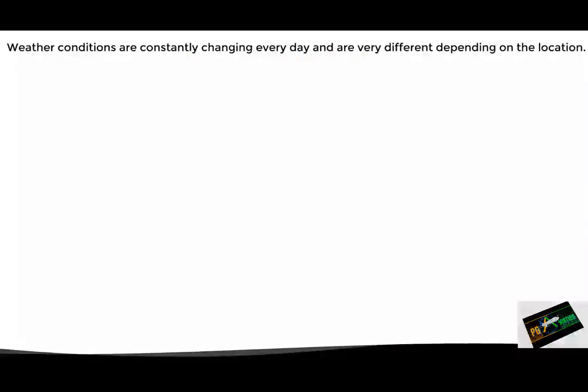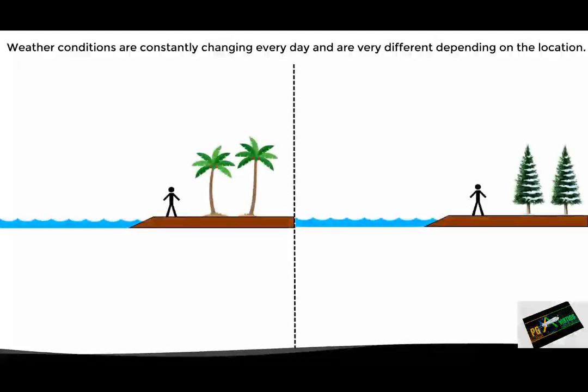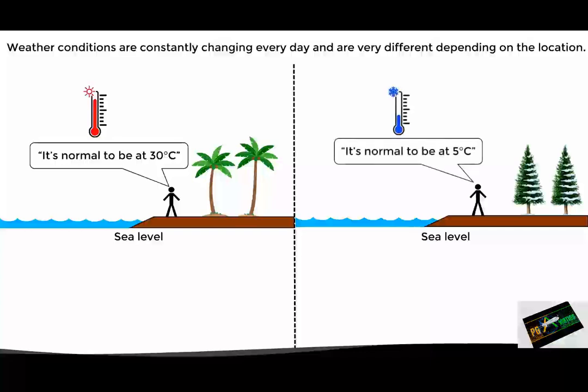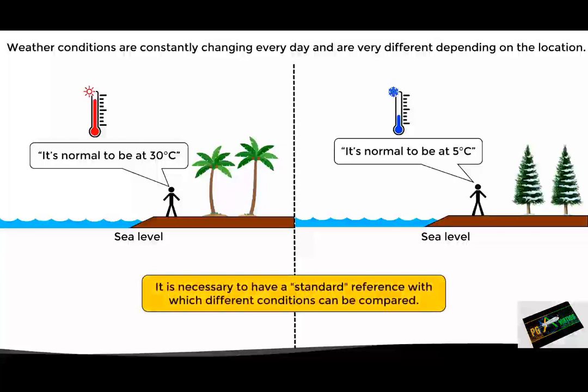First of all, we must say that the atmospheric conditions of a certain place are changing constantly depending on the season and local weather patterns. For example, here we have two people — one of them is on a coast with a tropical climate, while the other is on a coast with a colder climate. The person on the tropical coast would say that the usual temperature at sea level is 30 degrees Celsius, while the person on the cold coast would say that the normal temperature at sea level is 5 degrees Celsius. So for a certain altitude — in this case sea level — we have two different reference temperatures depending on the conditions of each location. This is why it is necessary to have a worldwide standard reference against which different conditions can be compared.